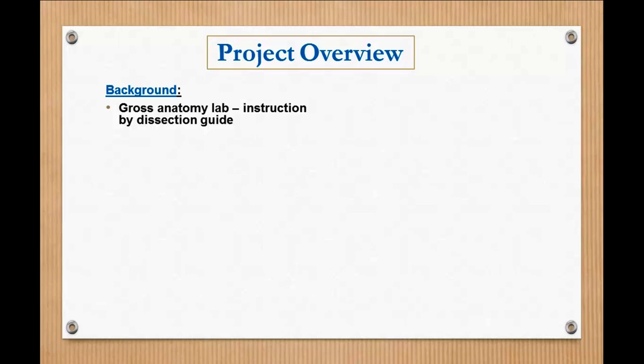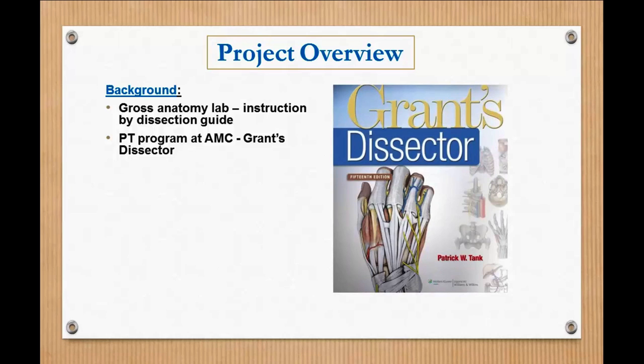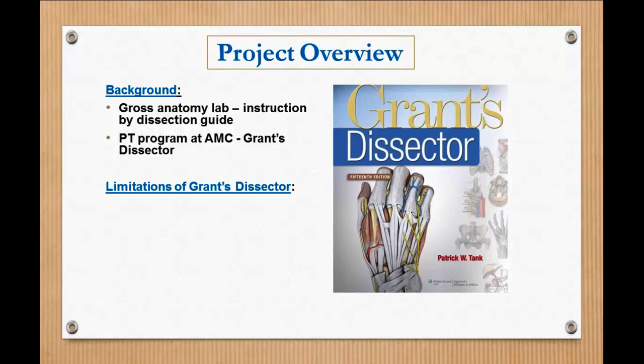Most of you probably are aware, having taken gross anatomy, that in the lab the primary instruction you receive is through a dissection guide. So it's really important for that to be clear and easy to use. Right now the physical therapy program on this campus uses Grant's Dissector. It's your standard spiral bound dissection guide that's been used for 60 years, designed for medical students. So it's great, but of course there are some limitations with it.